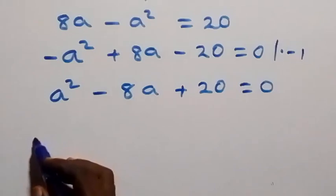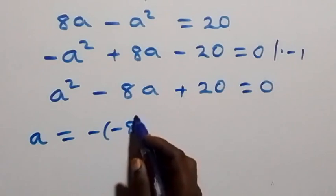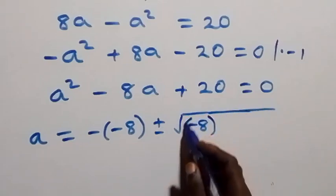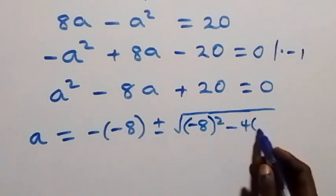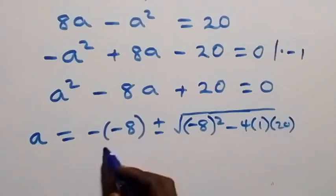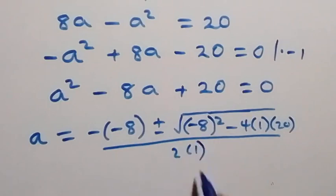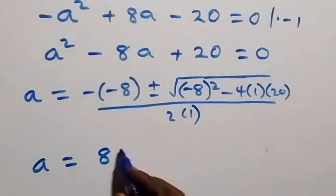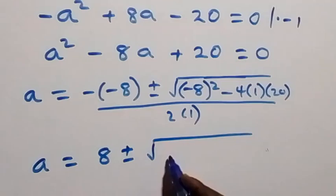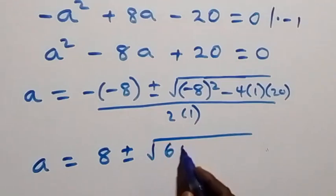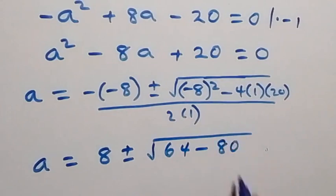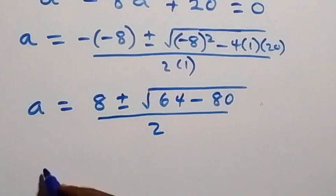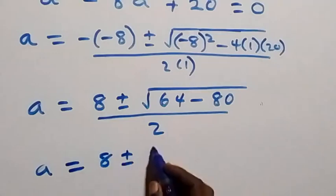From the formula, a will now be equals to minus (minus 8) plus or minus square root of (minus 8) squared minus 4 times 1 times 20, over 2 times 1. This becomes a equals to 8 plus or minus square root of 64 minus 80, over 2.